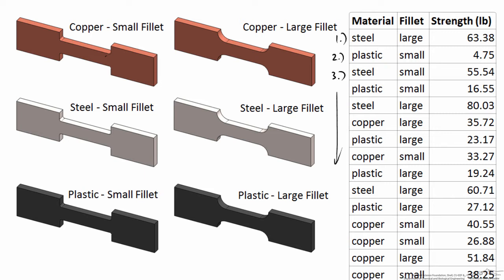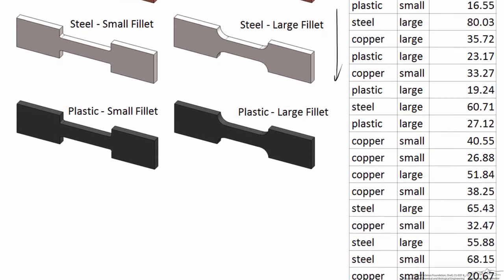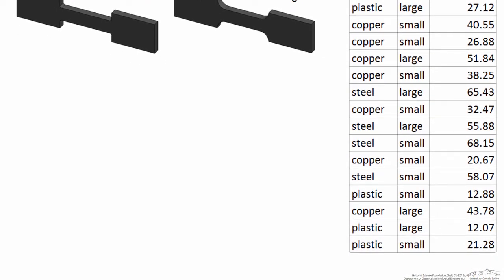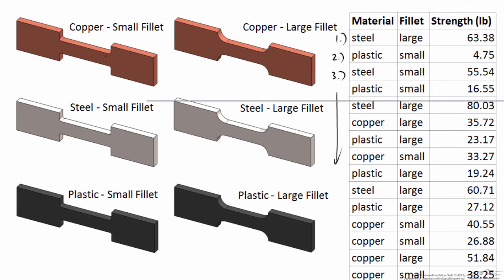There are a lot of different unknowns that you won't be aware of, so it's always a good thing to randomize the order in which you run your experiments. In this case, we've got a number of different experiments that were run. We want to figure out, based on all of these data points, does it matter what material the dog bones were made out of, and does it matter whether or not the fillets were small or large? It's really difficult to tell at a glance from the table.